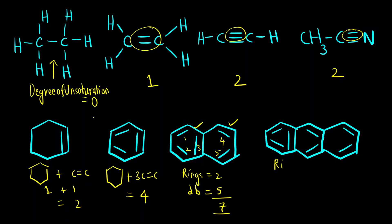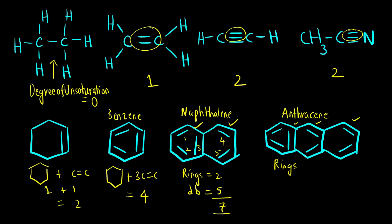This molecule was benzene, this was naphthalene, and this is anthracene. For anthracene: there are 3 rings and 7 double bonds, so 7+3 = total degree of unsaturation of 10.